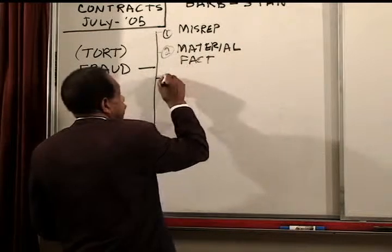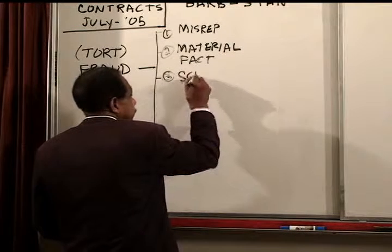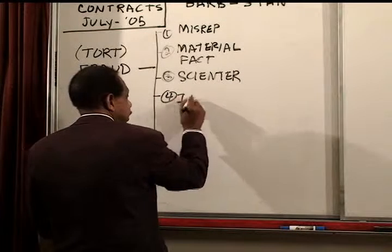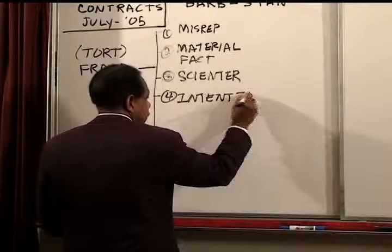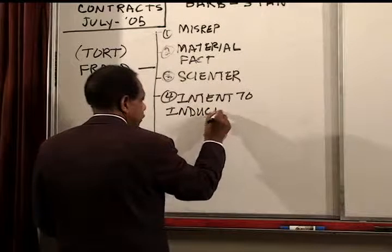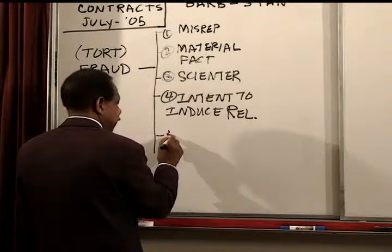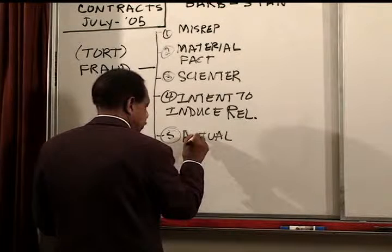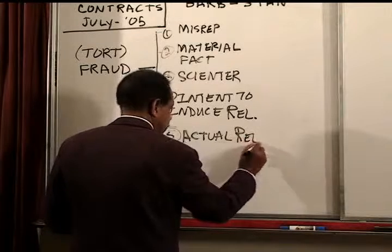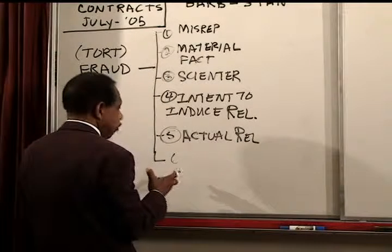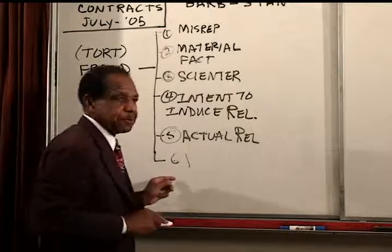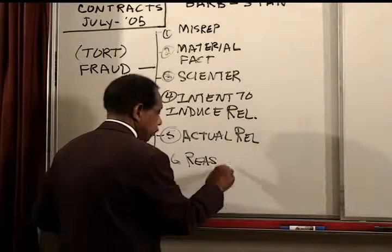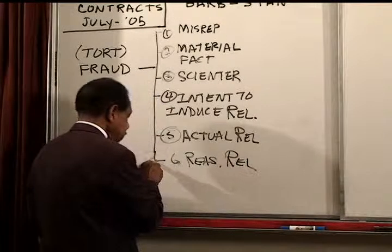Continuing the elements: misrepresentation of a material fact with scienter; number four, intent to induce reliance; number five, actual reliance; number six, reasonableness of the reliance — sometimes referred to as justifiable reliance; and number seven, damages.